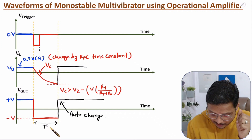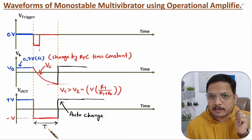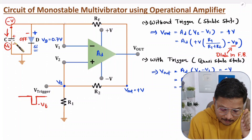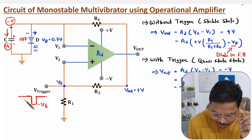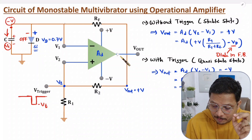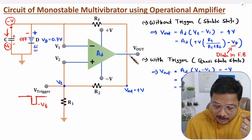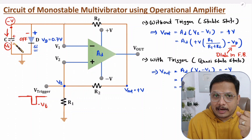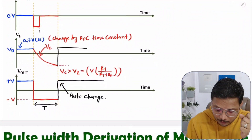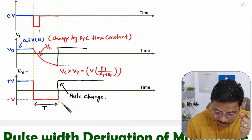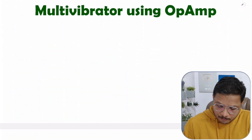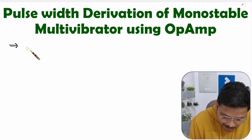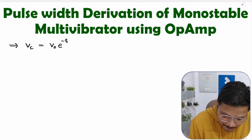To understand the derivation of time period T, you need to understand what is the voltage across the capacitor in the circuit. This capacitor has an initial voltage Vd, which is the diode forward bias voltage. After we give the negative-going pulse, output goes to minus V, and that minus V voltage charges this capacitor. The voltage across the capacitor VC equals the initial voltage V0 times E to the power minus T divided by RF·C.